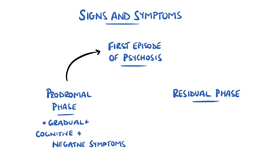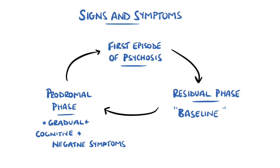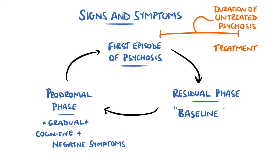Following the first episode of psychosis, patients often return to baseline, or a residual phase, before beginning another gradual worsening. The time between the onset of the first episode of psychosis and treatment is known as the duration of untreated psychosis, and this is a factor in overall functional outcome.